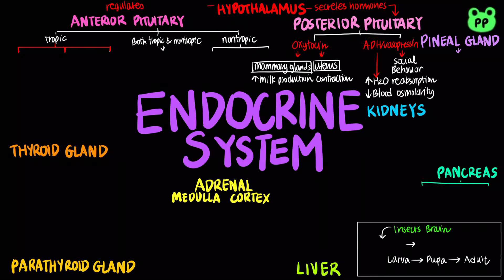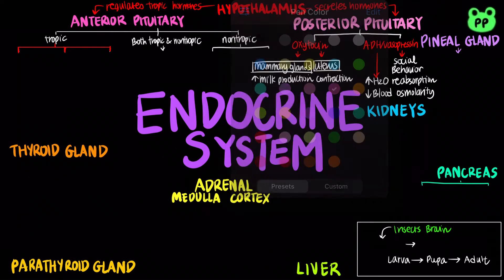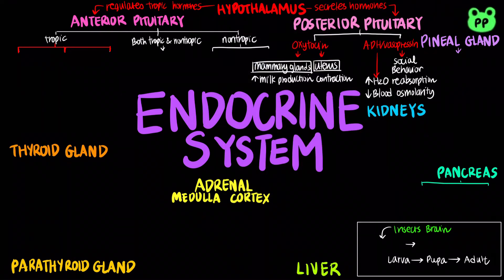The anterior pituitary makes and releases hormones under regulation of the hypothalamus. Non-tropic hormones, which target non-endocrine tissues, include prolactin, which also stimulates milk production in the mammary glands, and MSH, or melanocyte-stimulating hormone, which regulates pigmentation in melanocytes.